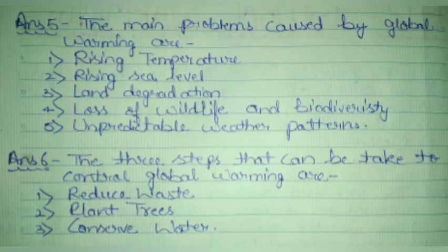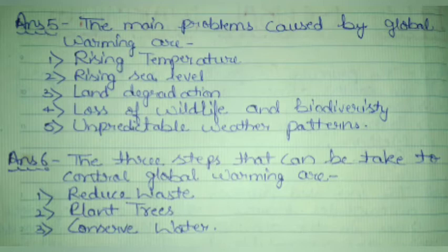Question 6: What 3 steps can we take to control global warming? The 3 steps we should take to control global warming are: reduce waste, plant trees, and conserve water.